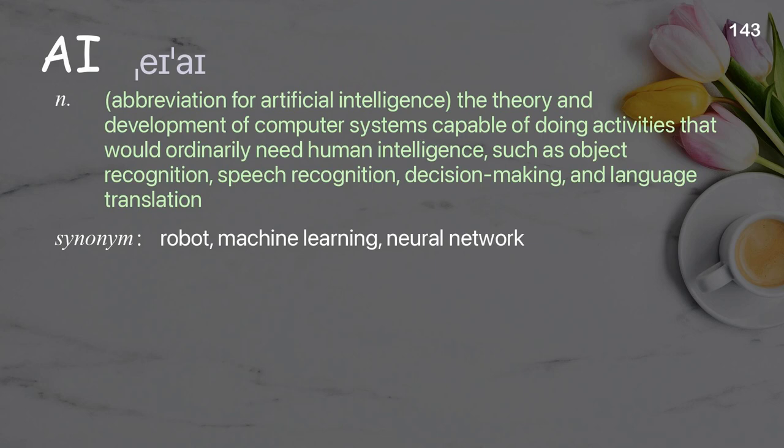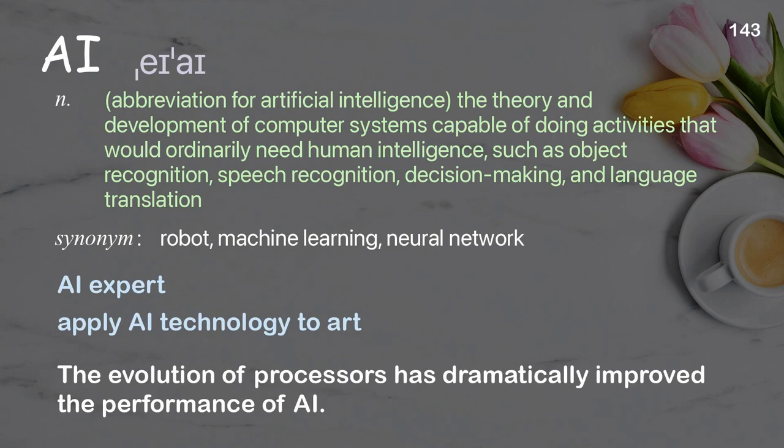AI: abbreviation for artificial intelligence. The theory and development of computer systems capable of doing activities that would ordinarily need human intelligence, such as object recognition, speech recognition, decision-making, and language translation. Examples: AI expert, apply AI technology to art. The evolution of processors has dramatically improved the performance of AI.